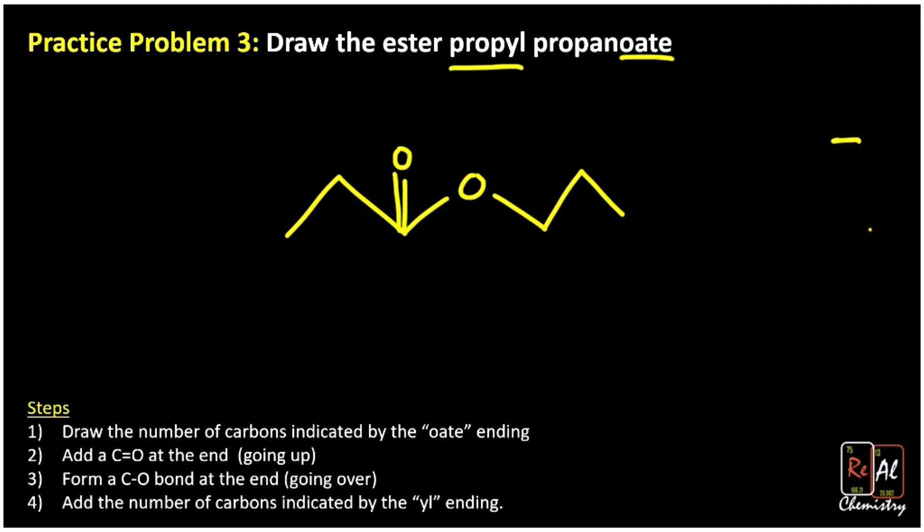And if you really hate how that looks, which I frankly kind of do, because in this case, it's more natural to draw the C=O bond going down, you can flip it that way. And that's totally great too. But notice basically the one that ends in oate is always going to be the one with the C=O bond. And the one that ends in YL is always going to be the one with the C-O single bond. That's naming esters.